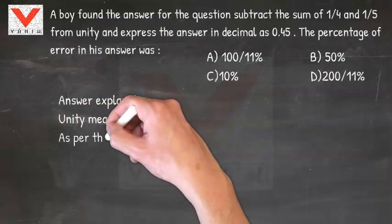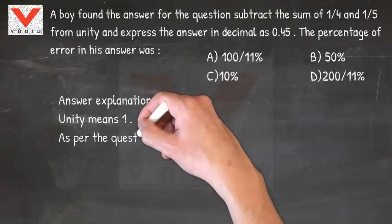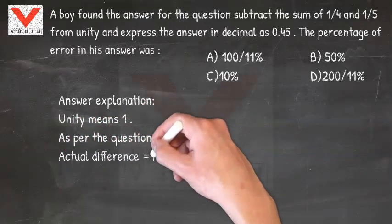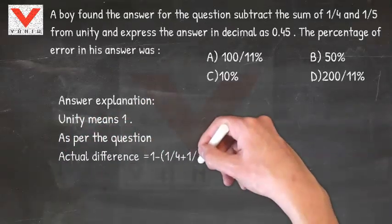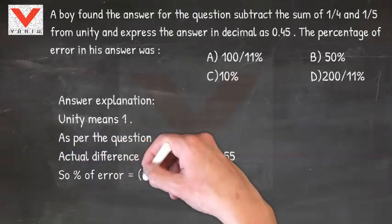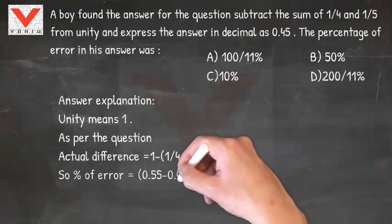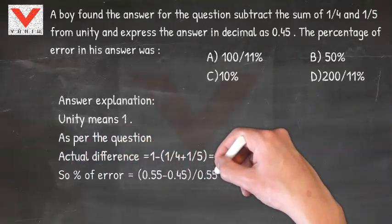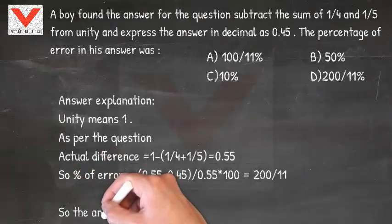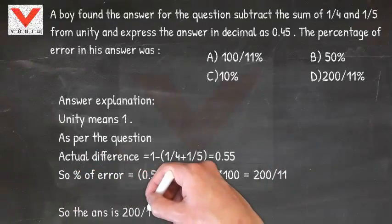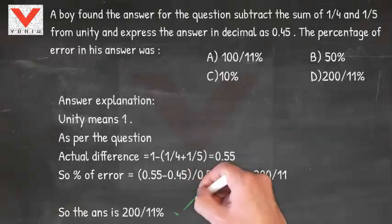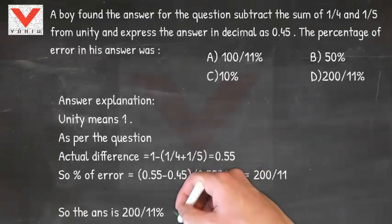Answer Explanation: Unity means 1. As per the question, the actual difference is 0.55. So the percent of error is 200/11. The answer is 200/11 percent.